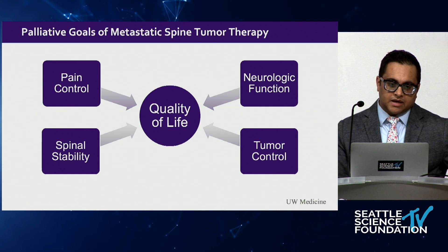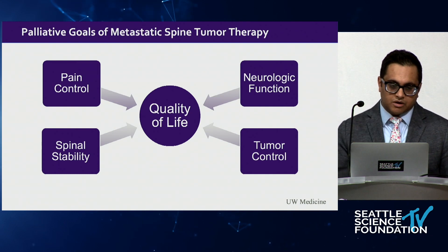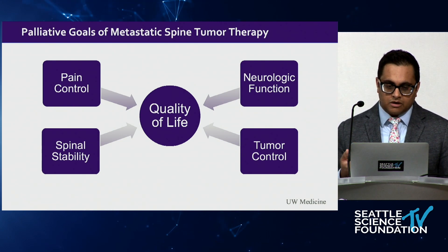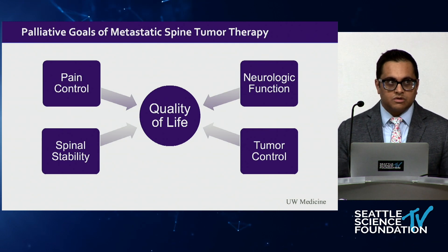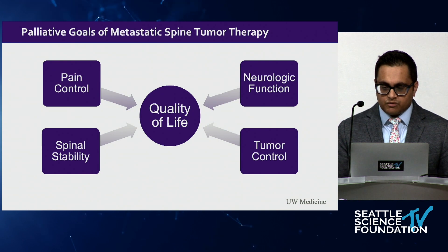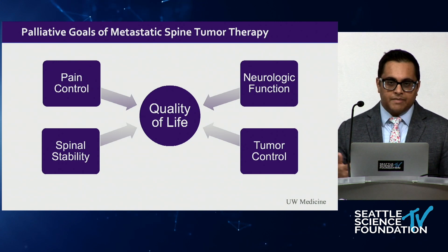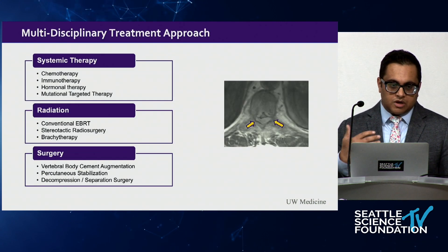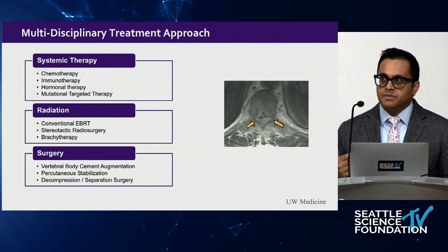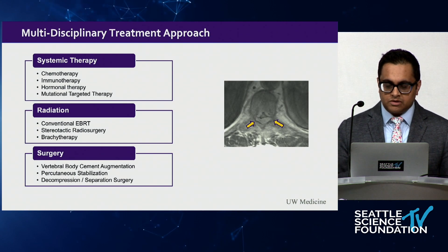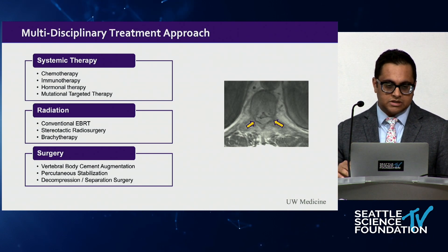The goal of metastatic spine surgery could be pain control, stabilization of the spinal column, preserving neurological function, or local tumor control. Ultimately it is palliative surgery, and the goal is to improve quality of life. It's incumbent upon us to do this in the least invasive way possible so the patient can resume their systemic treatments. Treatment is multidisciplinary—a combination of systemic treatment, radiation, and some form of surgery—so our goal is to get surgery done as quickly and efficiently as possible.